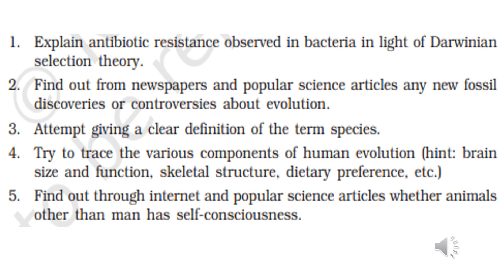Try to trace the various components of human evolution — brain size, functions, skeletal structure, dietary preferences, etc. Brain size increases gradually along with evolution. The brain capacity of Australopithecus is 500 cc, Homo habilis 700 cc, Homo erectus 800 to 1300 cc, and Homo sapiens average 1450 cc.